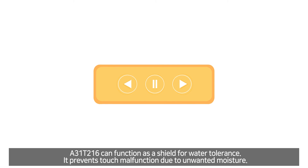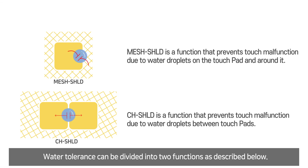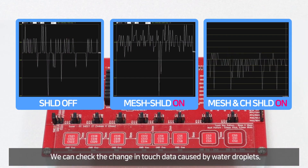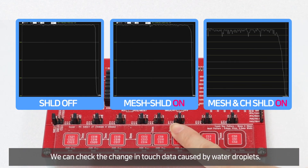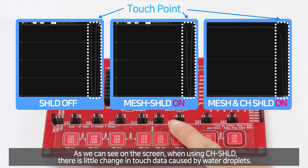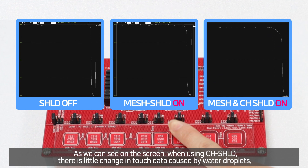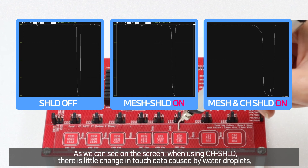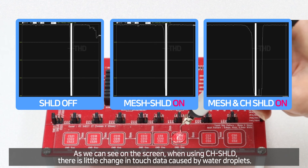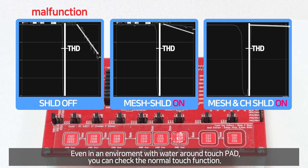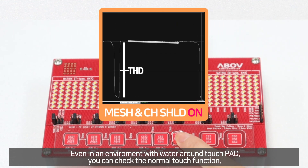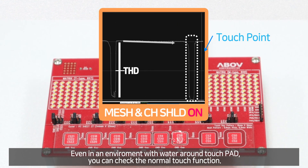A31T216 can function as a shield for water tolerance. It prevents touch malfunction due to unwanted moisture. Water tolerance can be divided into two functions as described below. As we can see on the screen, when using CH shield, there is little change in touch data caused by water droplets. Even in an environment with water around the touch pad, we can check the normal touch function.